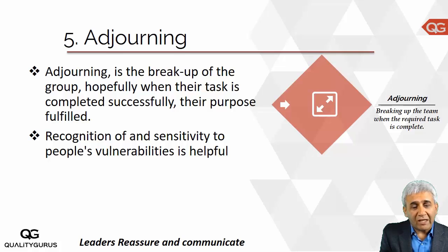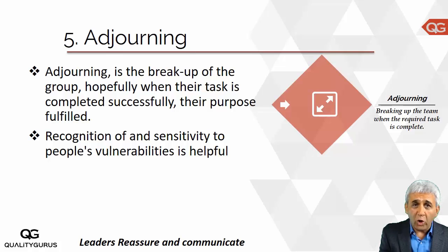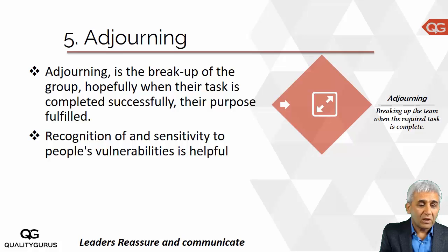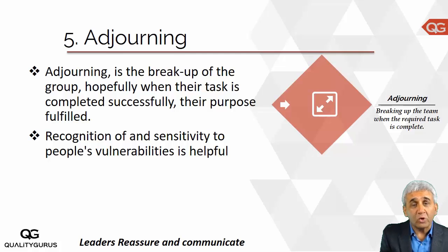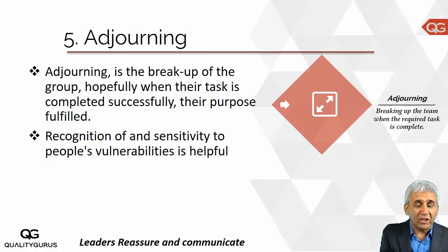The last stage is adjourning. This comes when the project objective has been achieved and there is a breakdown of the team, as members have to go back to their own places. They hope to meet again on some other improvement project. This is the time the team leader needs to recognize the efforts made by team members. Many people are vulnerable at this time because they don't know what will happen next. The team leader needs to communicate, reassure them, recognize them, and recommend them for the next project if they have done a good job.